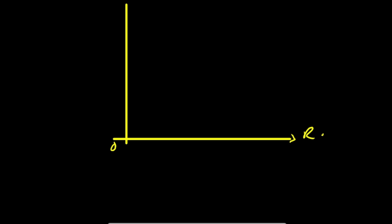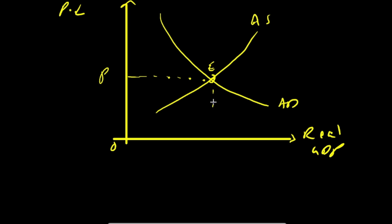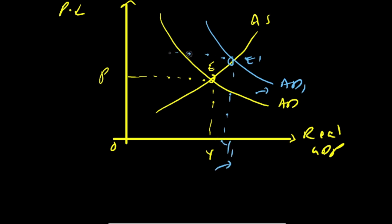For the demand-pull inflation graph, I'm using a shortened aggregate demand and aggregate supply curve. On the x-axis we have real GDP and on the y-axis we have price level (PL). Aggregate demand and aggregate supply meet at equilibrium point E, where price level is P and real GDP is Y. An increase in aggregate demand shifts the AD curve to the right from AD to AD1; equilibrium moves to E1, real GDP rises to Y1, and price level increases to P1.